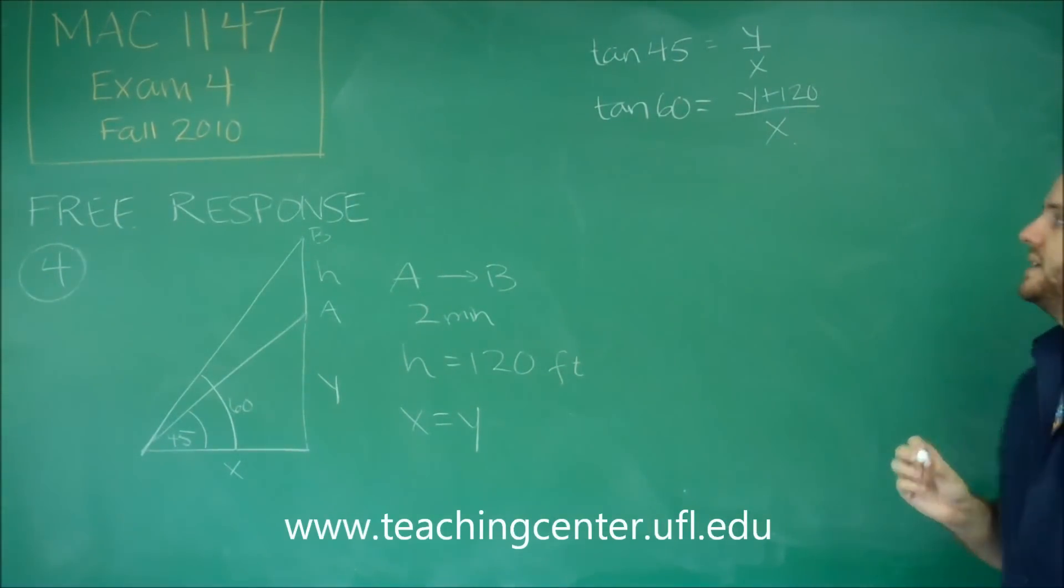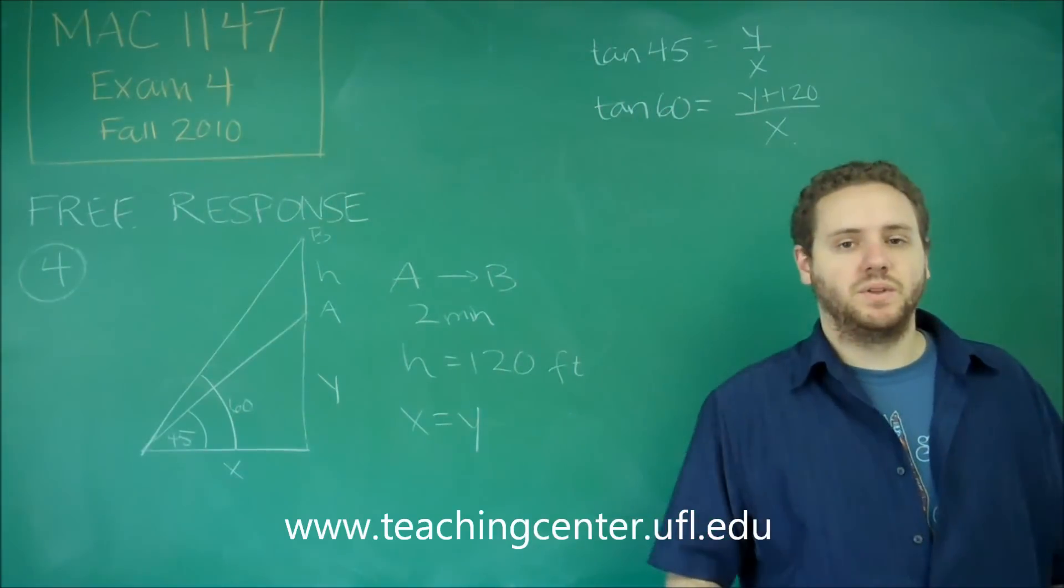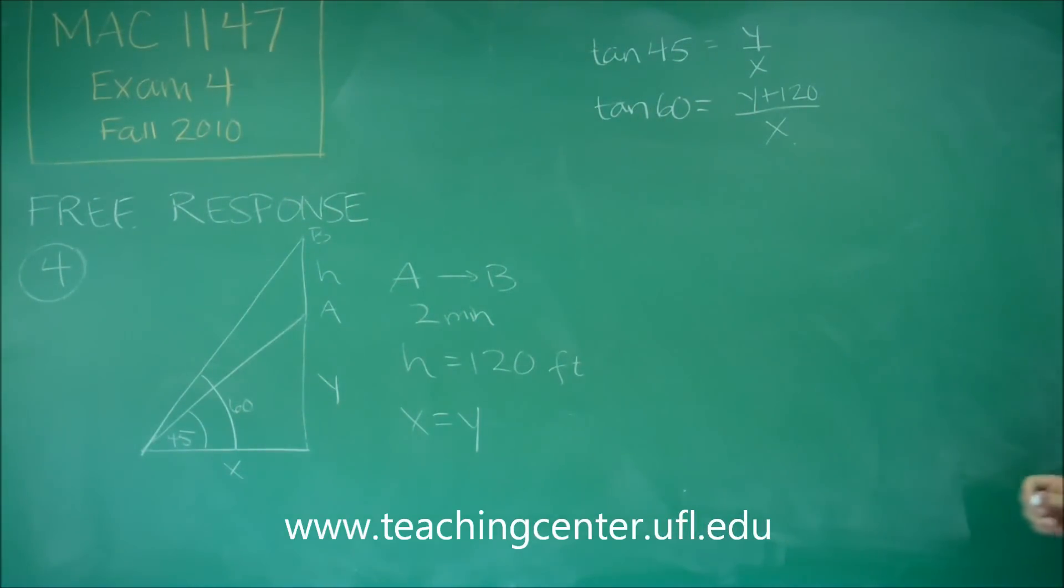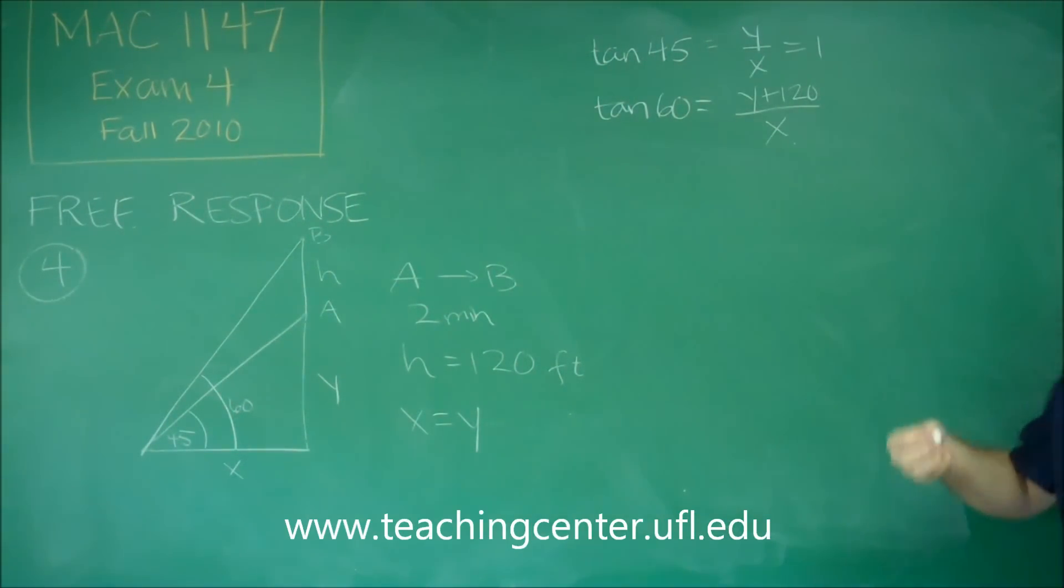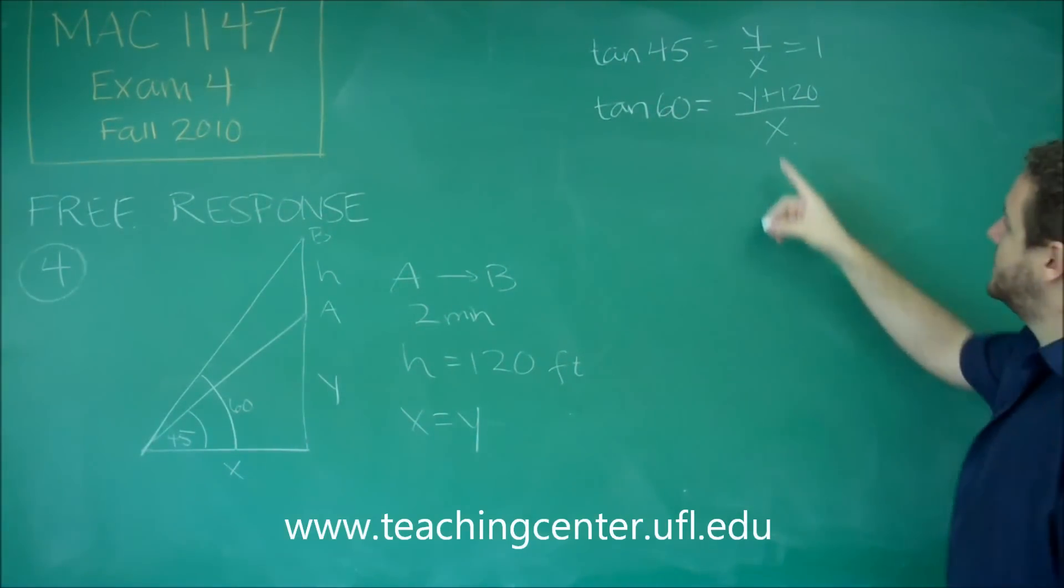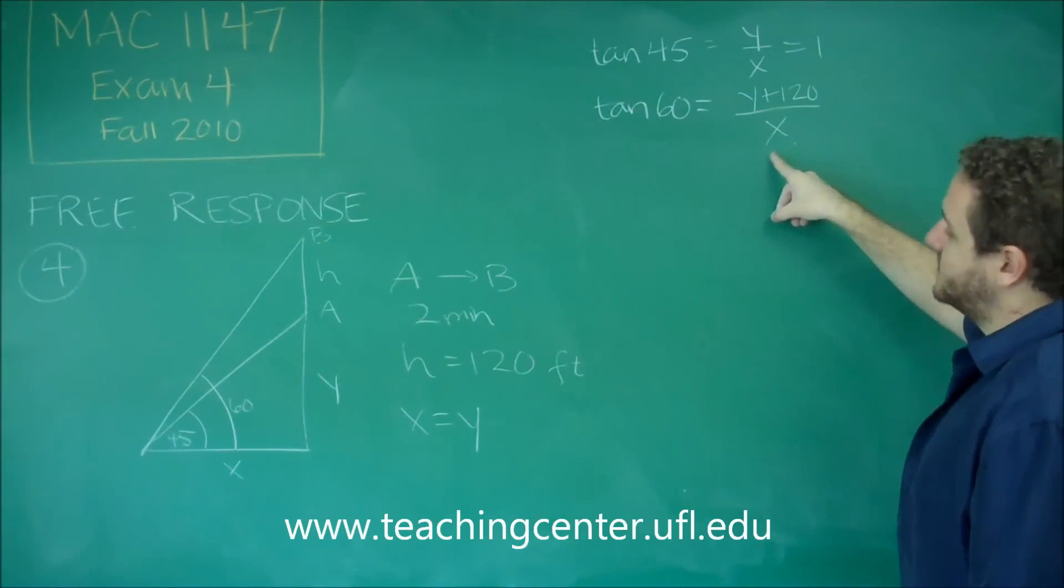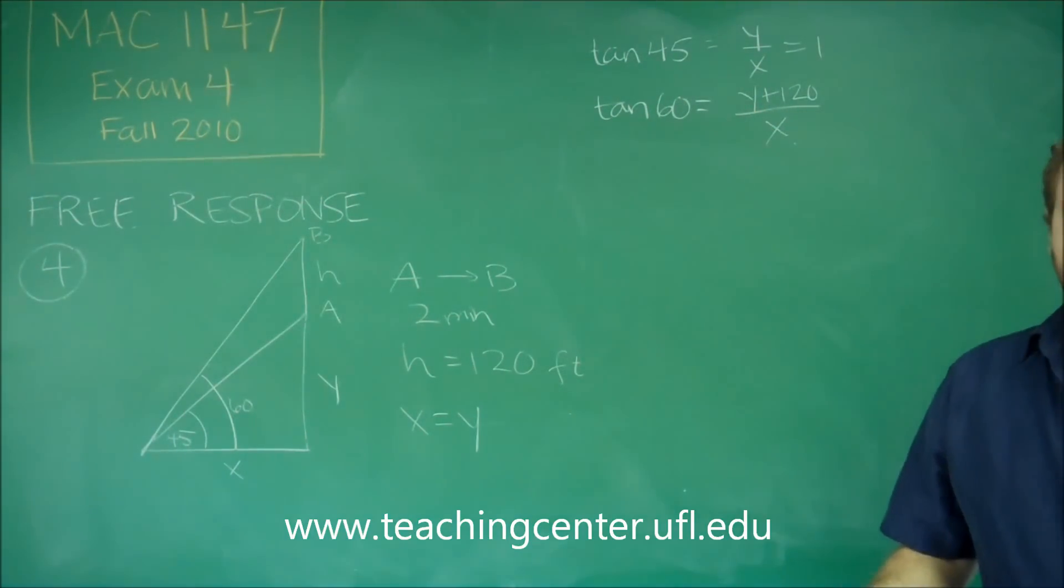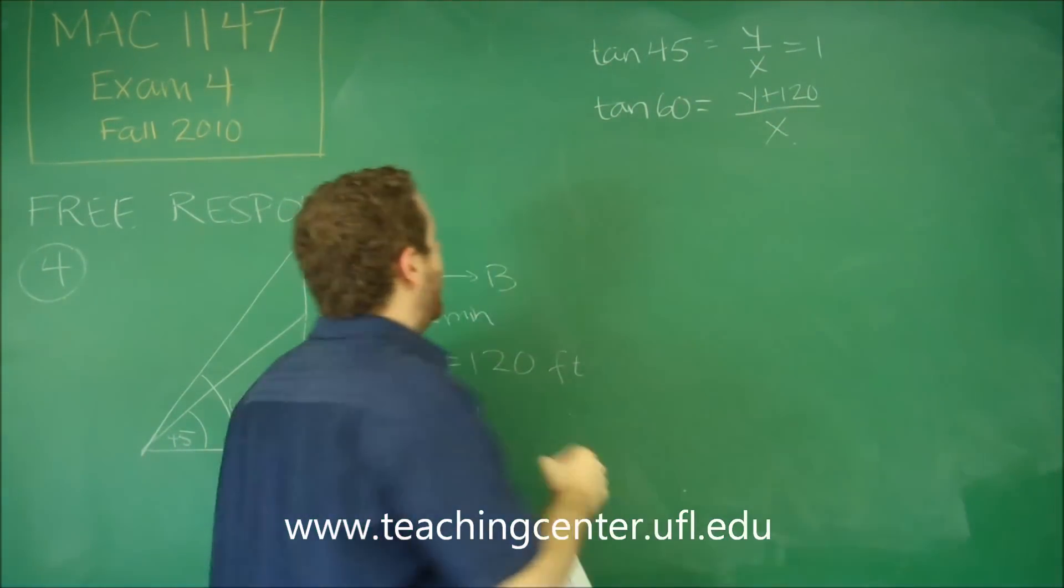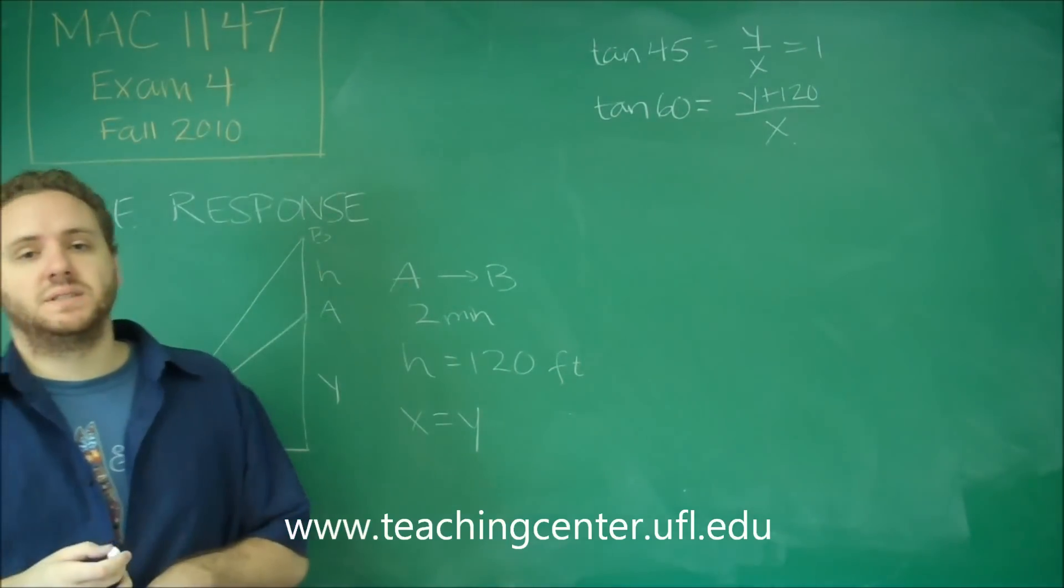So then finally, part D is just solving for X and Y. Remember that we already said that they have to be the same thing. So we know that this is equal to 1, because they're the same thing. Tangent 45 equals 1. So all that means is to solve for X, and therefore Y. Instead of Y here, we could just write X because they're the same thing. And all we need to know then is what is tangent of 60.